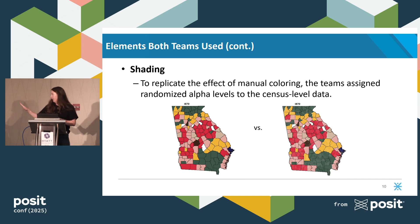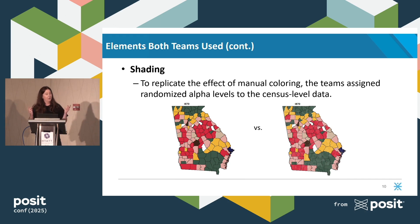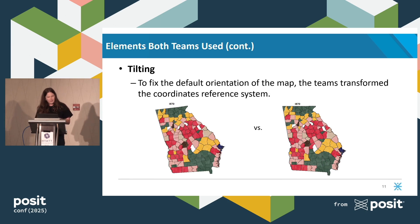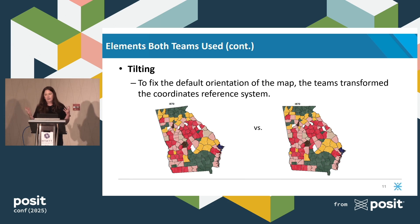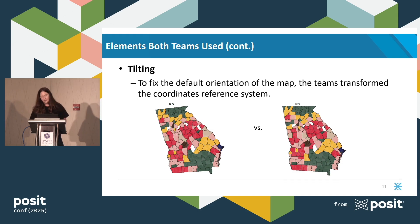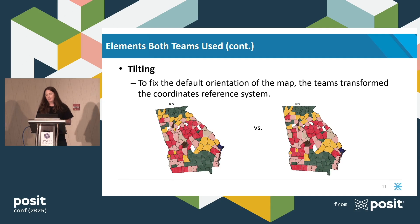The one on the left is without shading, the one on the right is with shading — I thought this was a really cool idea. And then finally, tilting: we were all really excited to get started. The DataViz Society provides all of the data you need, we opened up the shapefile, plotted it, and it was tilted. So we just transformed the coordinate reference system to ensure that the maps appeared straight.